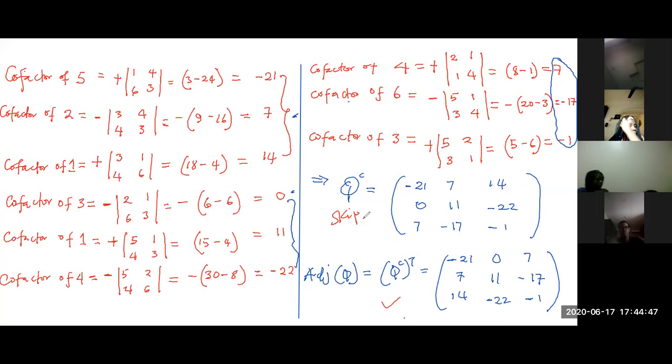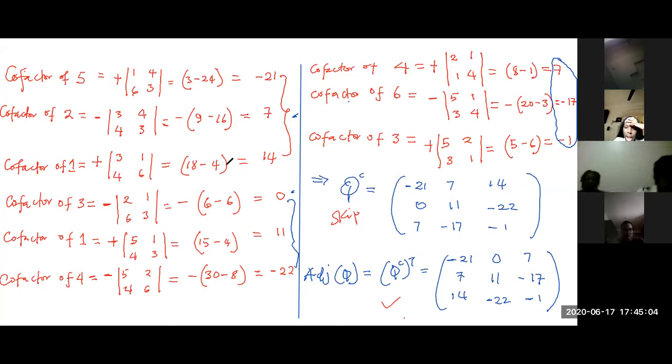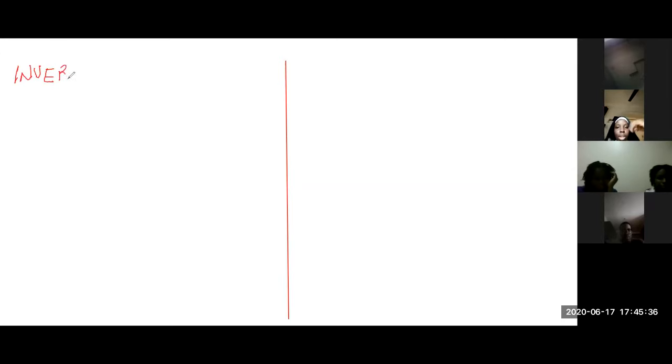Before we go — we will stop in the next five or six minutes as my battery is low. I just want to talk about the inverse of a matrix, which you are going to do on your own. The inverse of A, written A inverse, is defined as the adjoint of A divided by the determinant of A. This also reminds us why singular matrices do not have inverses — they are matrices with determinant zero.